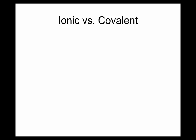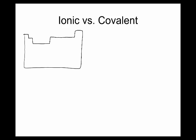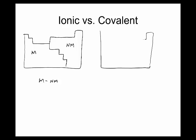Ionic versus covalent: let's draw a quick periodic table. Ionic compounds are when you have a nonmetal bonded to a metal. In this tutorial and the next several days in class, you're not going to see metal to nonmetal — you don't draw Lewis structures for ionic compounds. All the molecules you'll see the next few days in class are going to be a nonmetal bonded to more nonmetals.